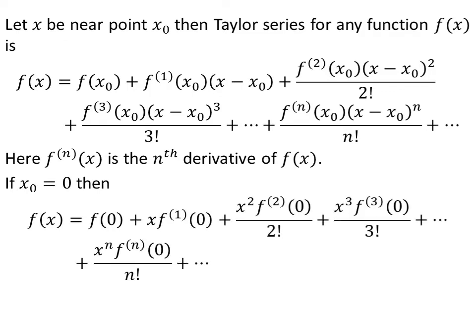Assuming x0 is equal to zero, the Taylor series for f(x) is given as the value of f at zero, plus x times the first derivative of f at zero, plus x squared times the second derivative of f at zero upon factorial of 2, plus x cubed times the third derivative of f at zero upon factorial of 3, plus so on up to infinity.